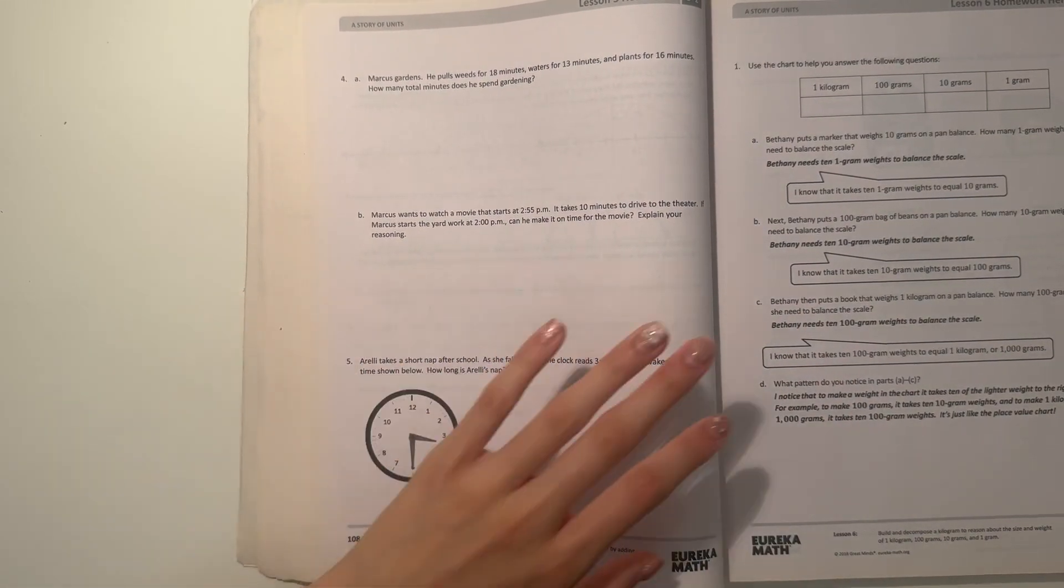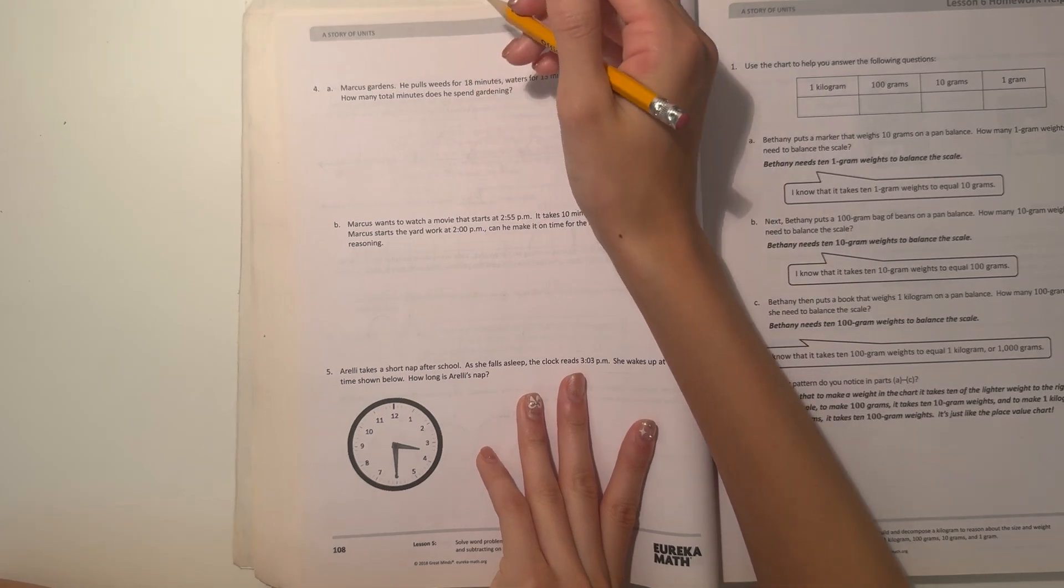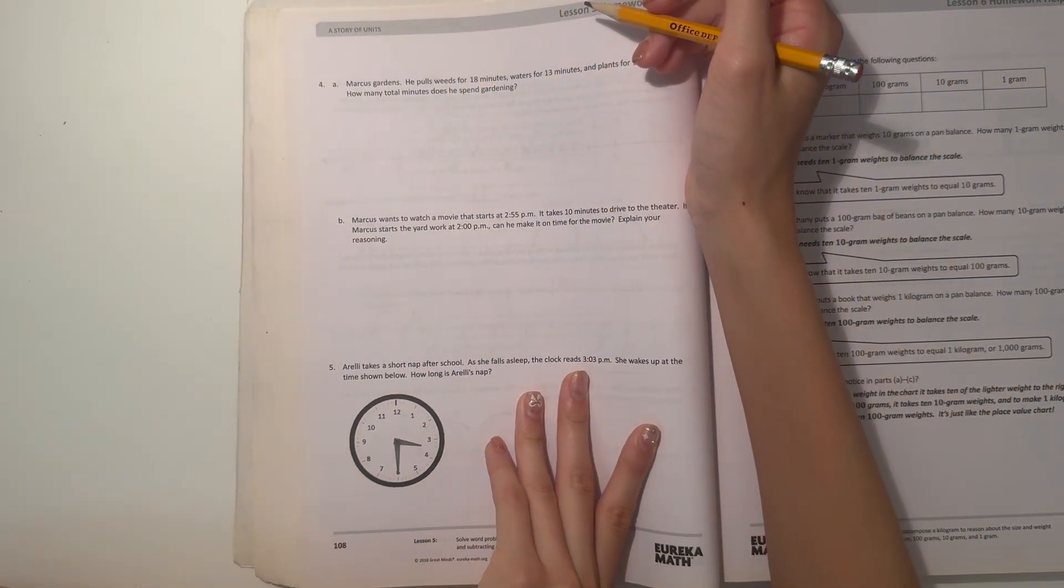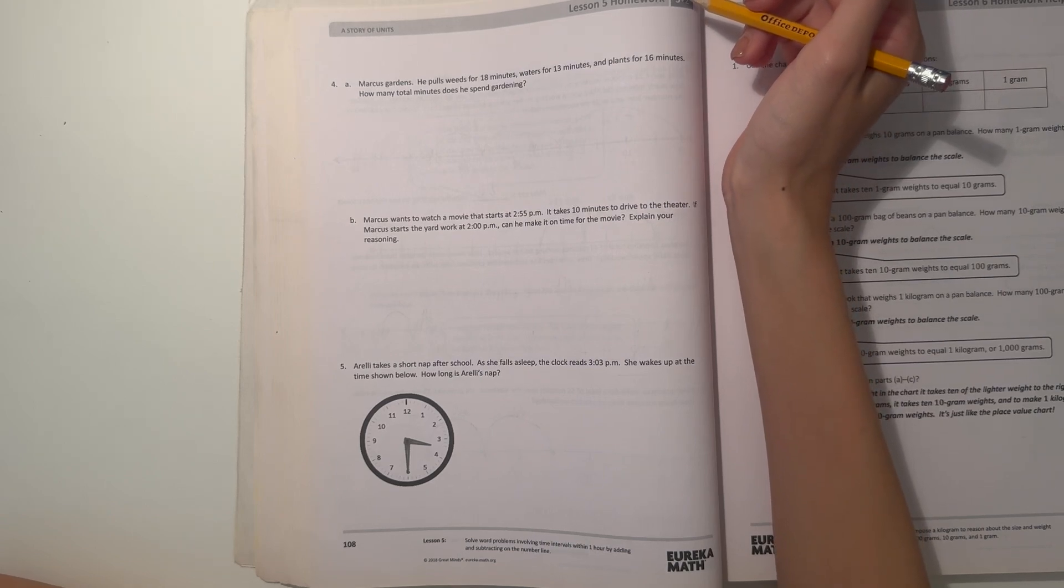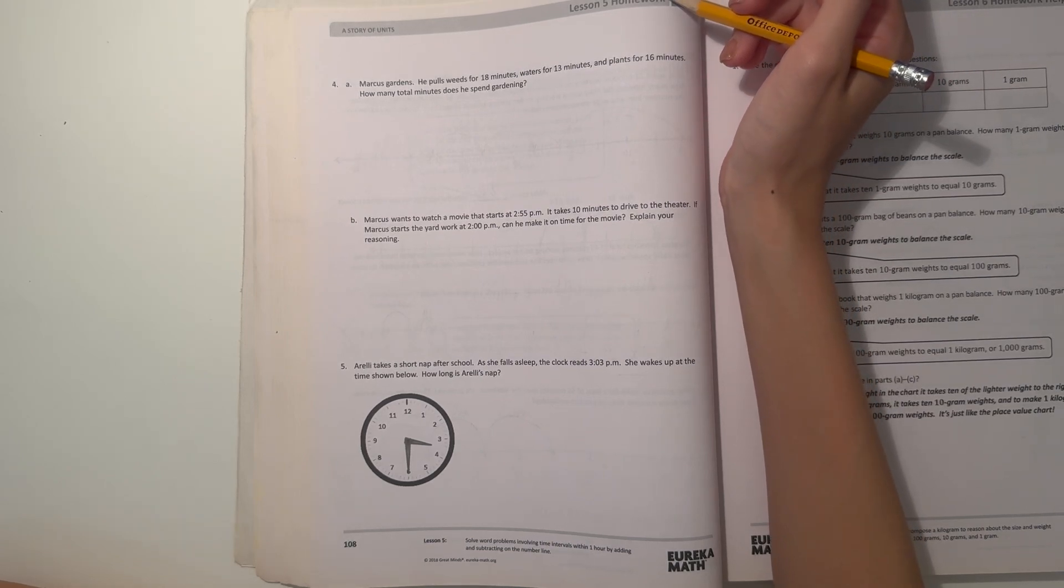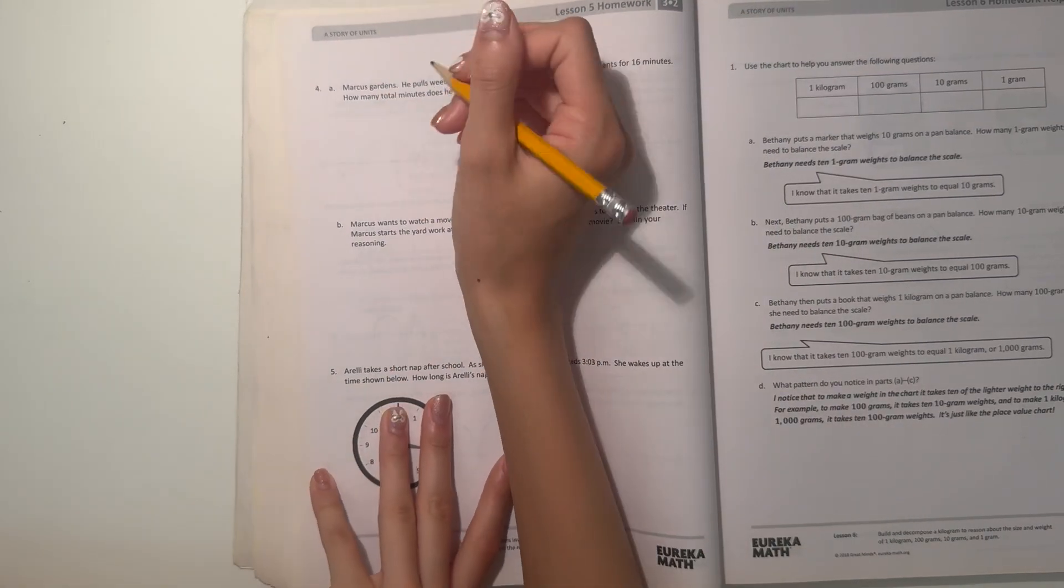So 4A, Marcus Gardens. He pulls weeds for 18 minutes, waters for 13 minutes, and plants for 16 minutes. How many total minutes does he spend gardening? I think, let's do a tape diagram for this one.